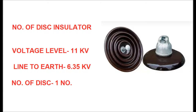For the 11 kV voltage level, the phase-to-phase voltage is 11 kV. The line-to-earth voltage is 11 divided by √3, which equals 6.35 kV. Therefore, it is sufficient to use one disc for a suspension type string, but for tension type, one more disc is added — that is, two discs are used for an 11 kV system.